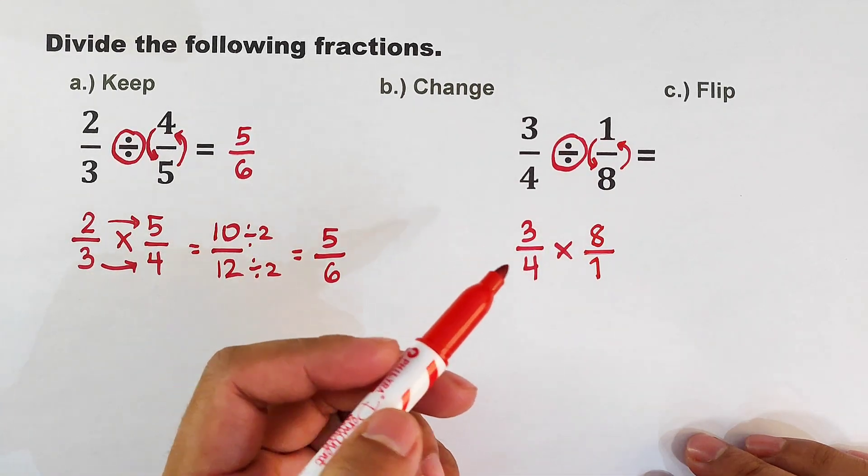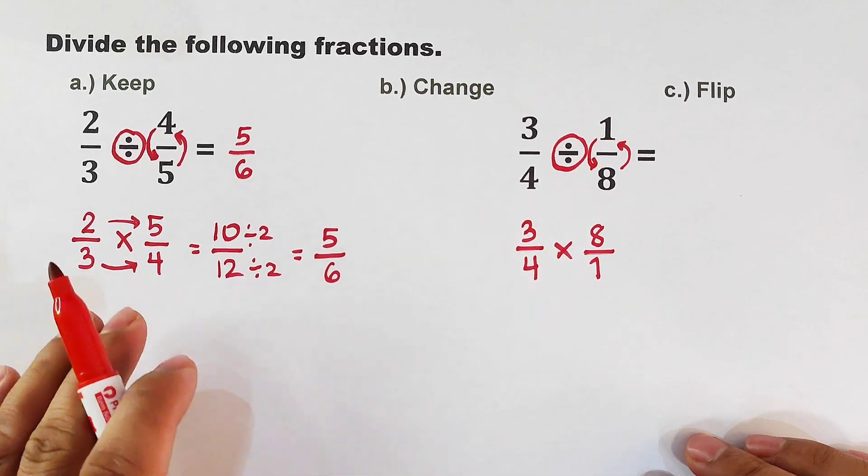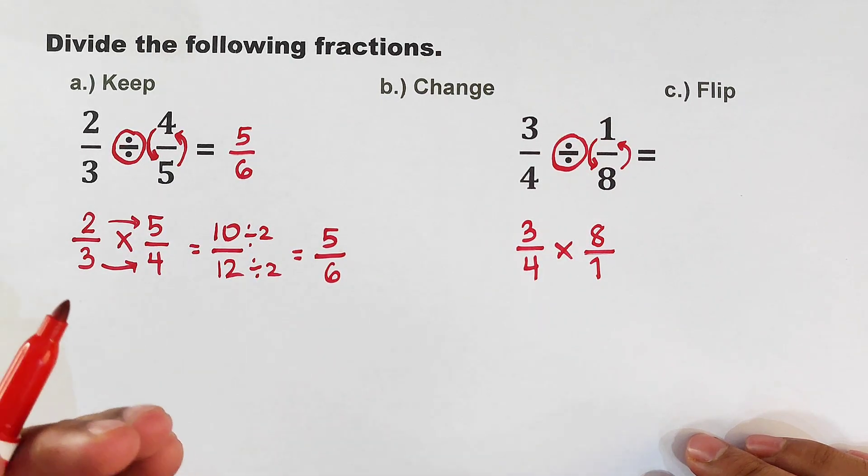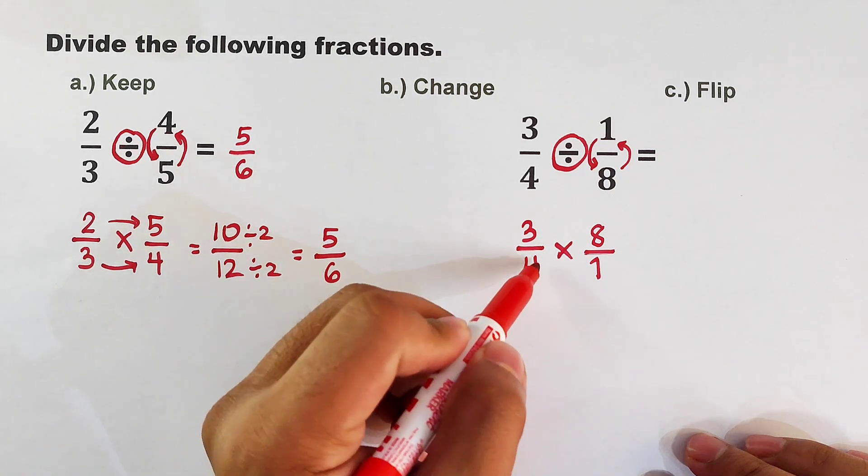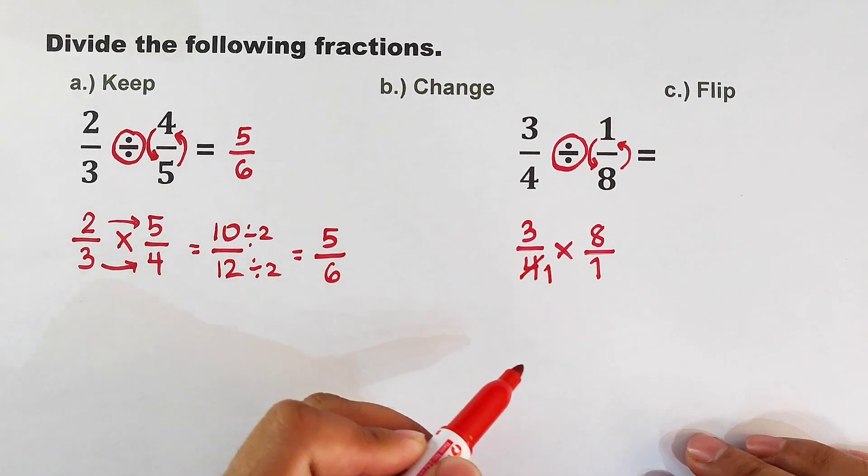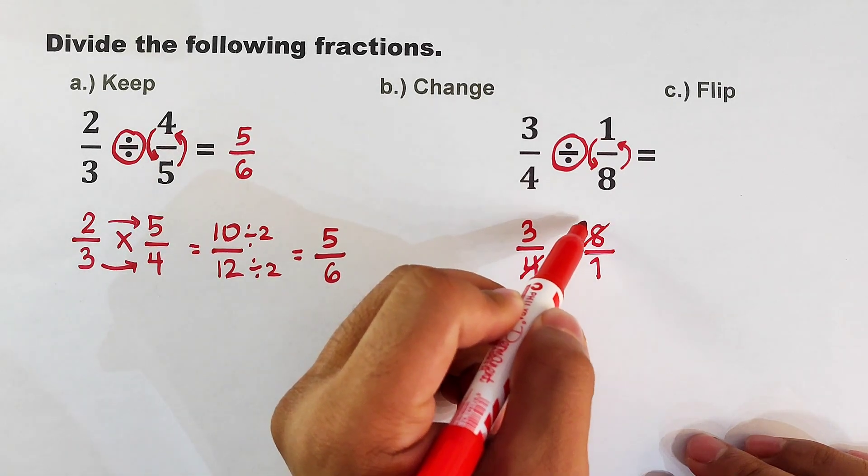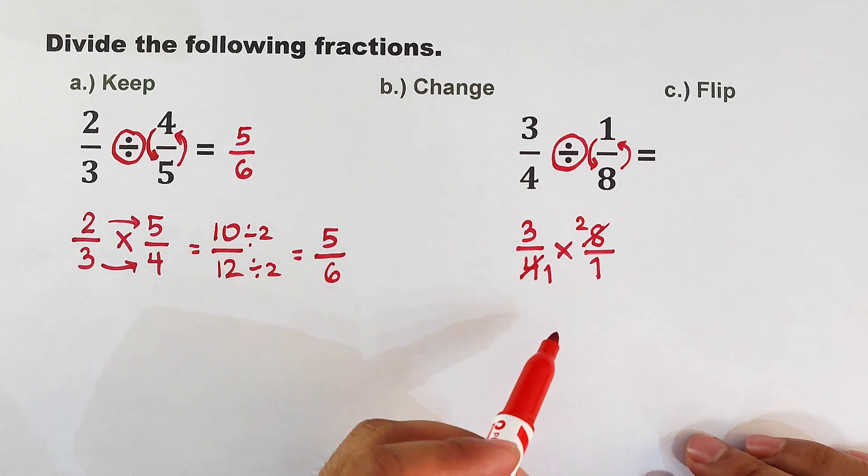Now in this case, guys, we can use the cancellation method. Actually, here we can also use the cancellation method, but I am just sticking to the process of multiplying it. So here we can cancel this out, it will become 1. Here we can cancel 8, so there are two 4s here, so it will become 2.